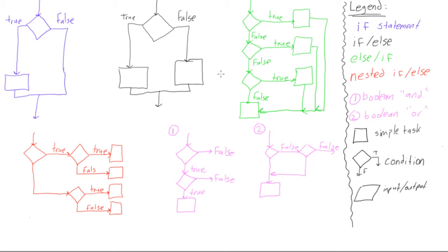So I did a legend over here because there's a couple different graphs and it's just color coded. The blue ones is just for if statements, black is for if-else, green is for else-if, and so on.